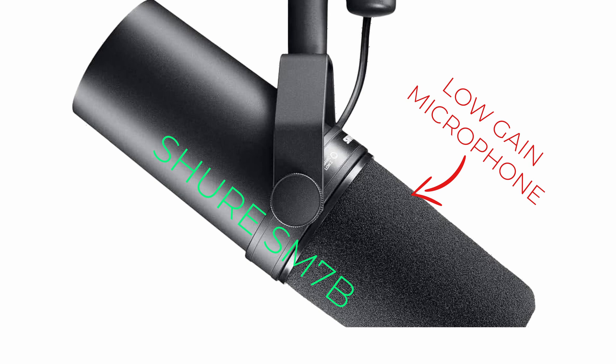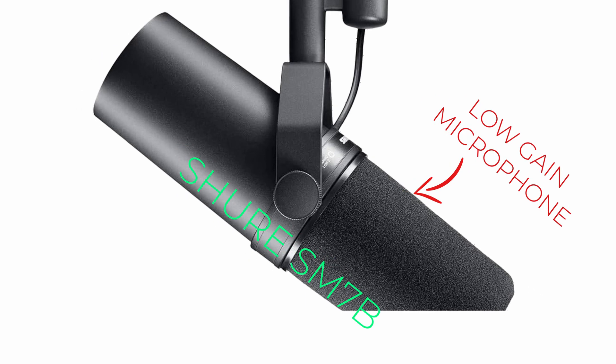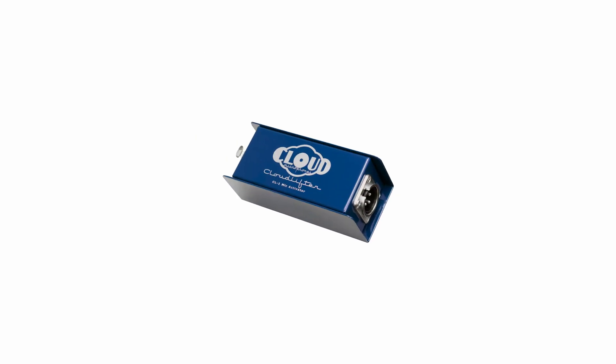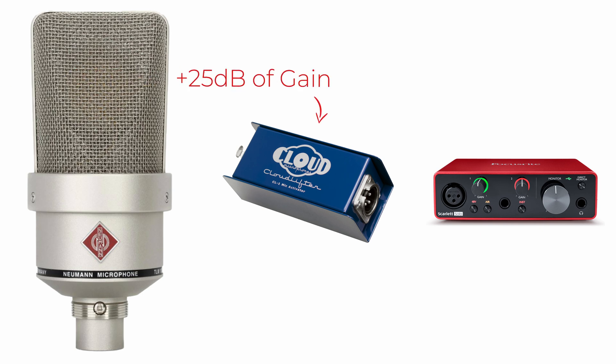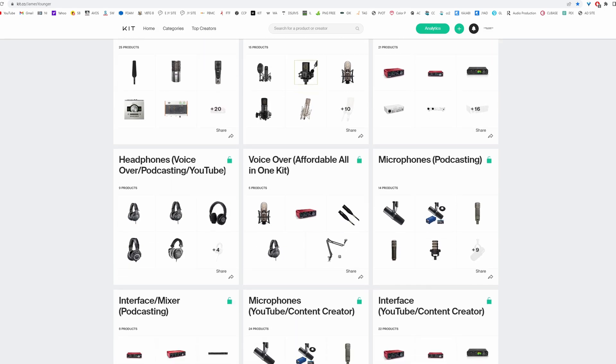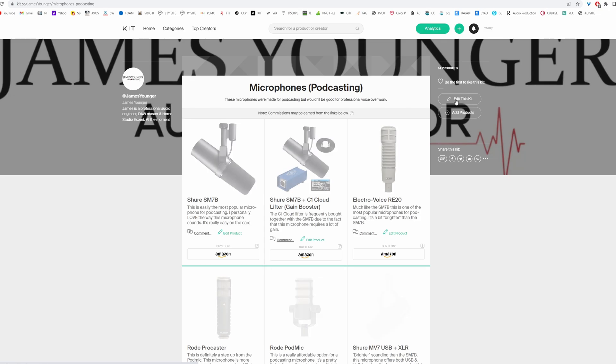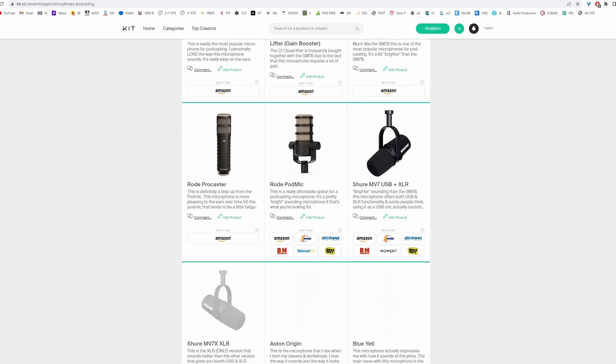When it comes to microphones like the Shure SM7B, most people end up buying a gain booster like a Cloudlifter, for example. This gain booster goes between your microphone and the interface and increases the gain output of the microphone, which allows you to not have to turn up the interface as much, which in turn reduces the amount of self-noise present in your audio. There are a few different gain boosters out there to choose from, and you can find those over at my recommended equipment page.